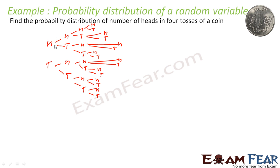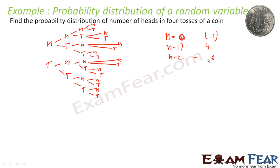If you see the 16 possible scenarios — 1 through 8 and 8 more — then you count the number of heads. You will find: head equal to 0 in 1 scenario, head equal to 1 in 4 scenarios, head equal to 2 in 6 scenarios, head equal to 3 in 4 scenarios, and head equal to 4 in 1 scenario.